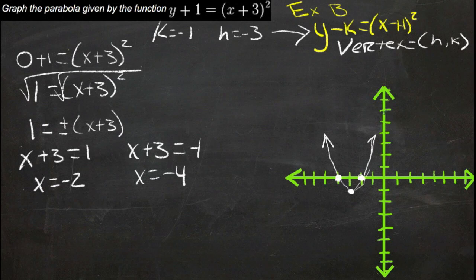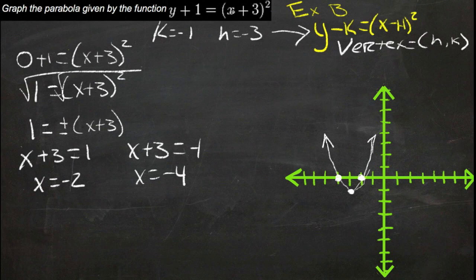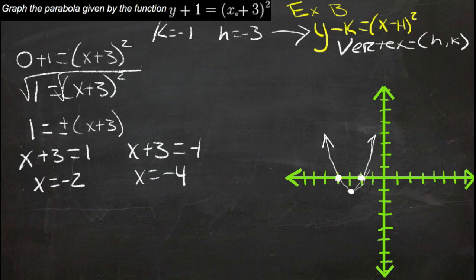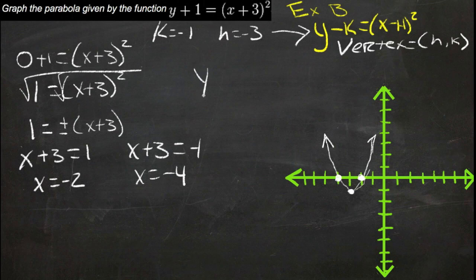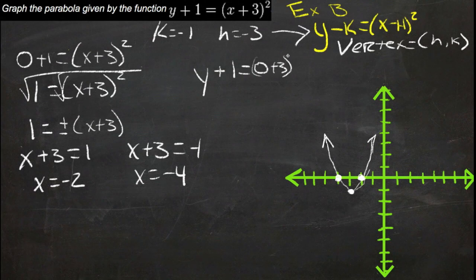And then if we want, we could actually find where it hits over here by finding the y-intercept. The y-intercept occurs where x equals 0, because then we're not going left or right at all. So if we substitute 0 in for x.